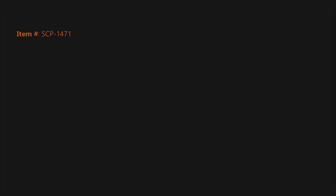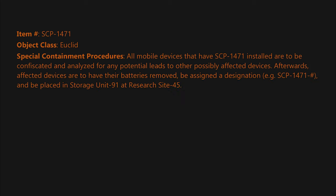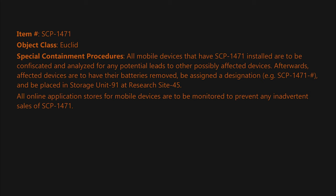Item number SCP-1471. Object class: Euclid. Special containment procedures: All mobile devices that have SCP-1471 installed are to be confiscated and analyzed for any potential leads to other possibly affected devices. Afterwards, affected devices are to have their batteries removed, be assigned a designation (e.g., SCP-1471-[number]), and be placed in storage unit 91 at research site 45.